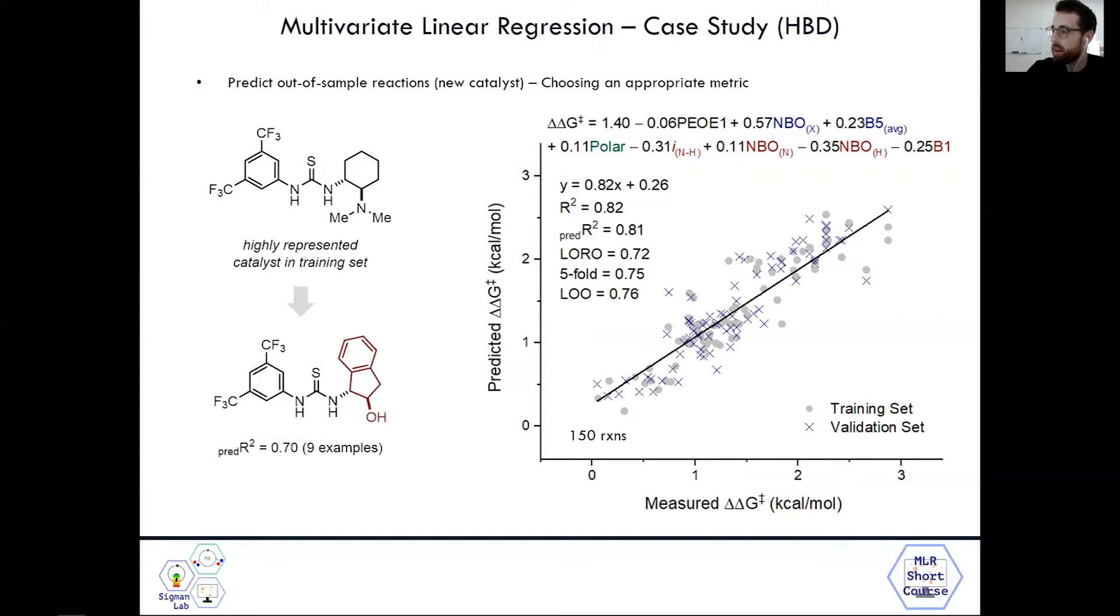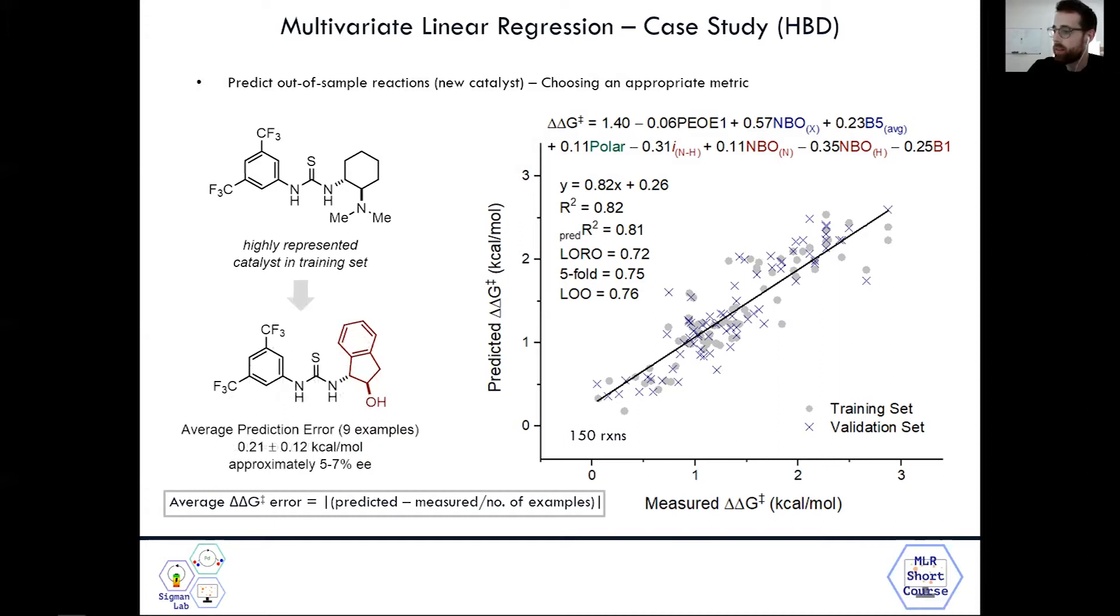Looking at this hydroxyl-featured diarrhea catalyst, using it as a validation set, we get a predicted R² of 0.7 over nine examples, which is pretty good prediction relative to our model's fit. But we can think of a different way to express prediction error using average ΔΔG error, which equals the absolute value of predicted ΔΔG minus measured ΔΔG over the number of examples. We have an average prediction error of 0.21 kcal/mol, which equates to about 5-7% EE. This is a good example where both R² and average prediction error are representative of good prediction or low error.